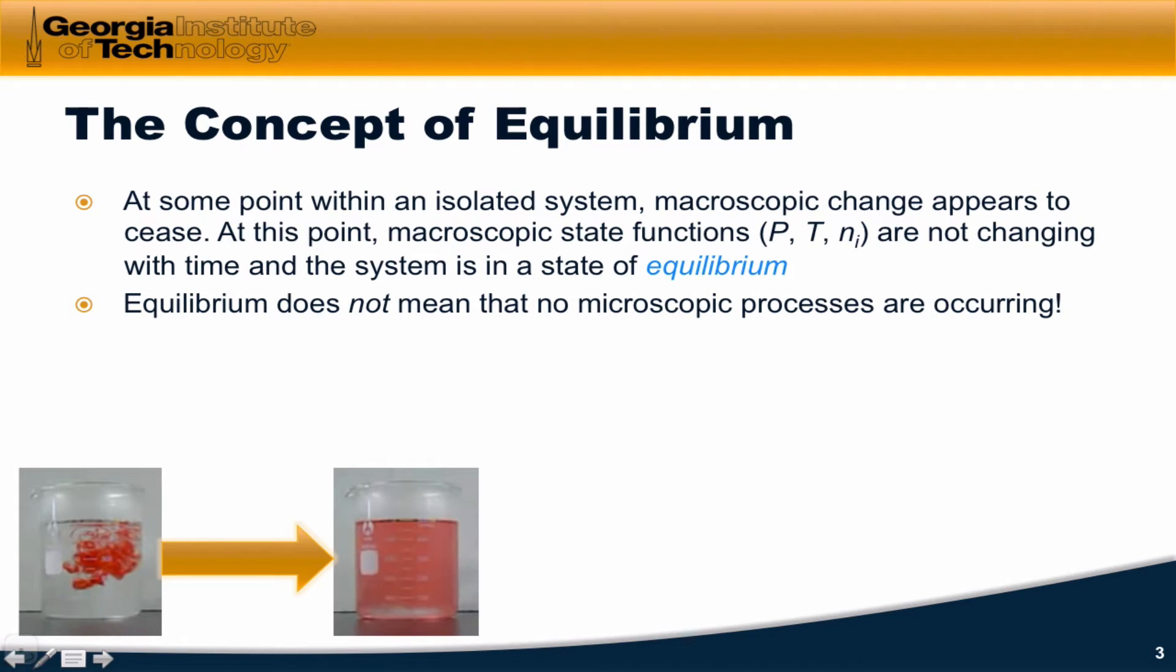Another good example of this is provided by dropping some drops of food coloring into a beaker of water. Spontaneously, over time, the dye molecules and the food coloring spread out, until we reach a point where the dye molecules are distributed uniformly about the liquid.